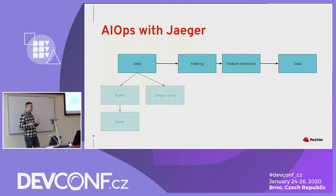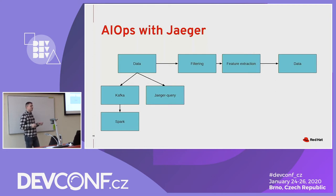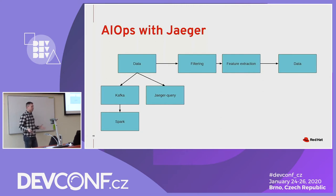To get the data, a Jaeger deployment can be configured to use Kafka, so we can connect to the same Kafka instance and get data from there, then aggregate on time-based windows. For all historical data, we can use Jaeger query, which then connects to the database.